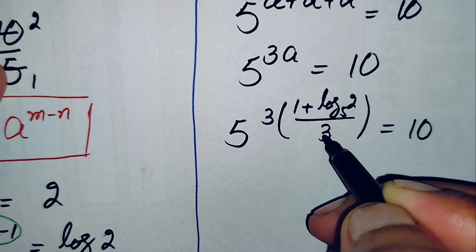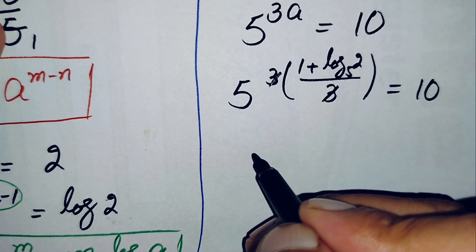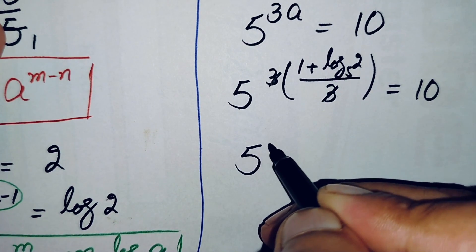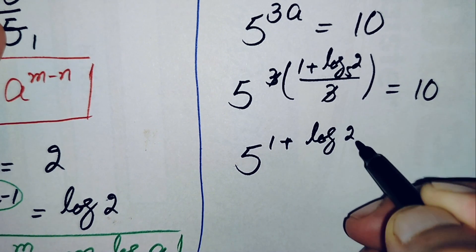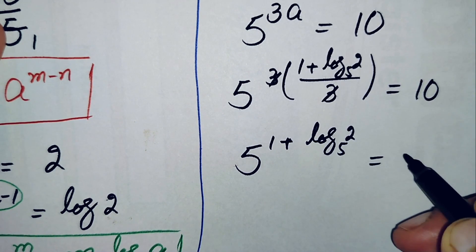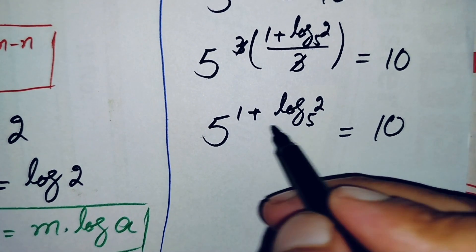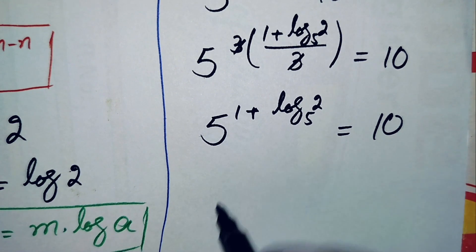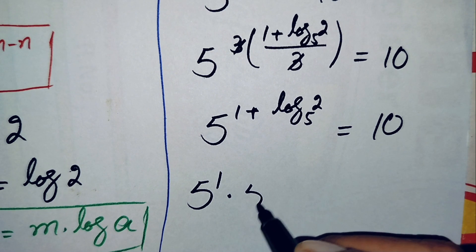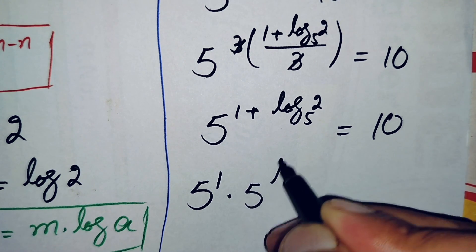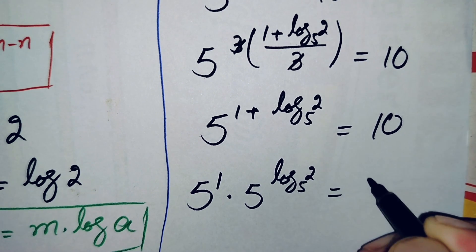Multiplying 3 by (1 + log₅2)/3, the 3s cancel, leaving 5 raised to power (1 + log₅2) equals 10. Using the exponent addition property, we split this as 5 raised to power 1, times 5 raised to power log base 5 of 2, equals 10.